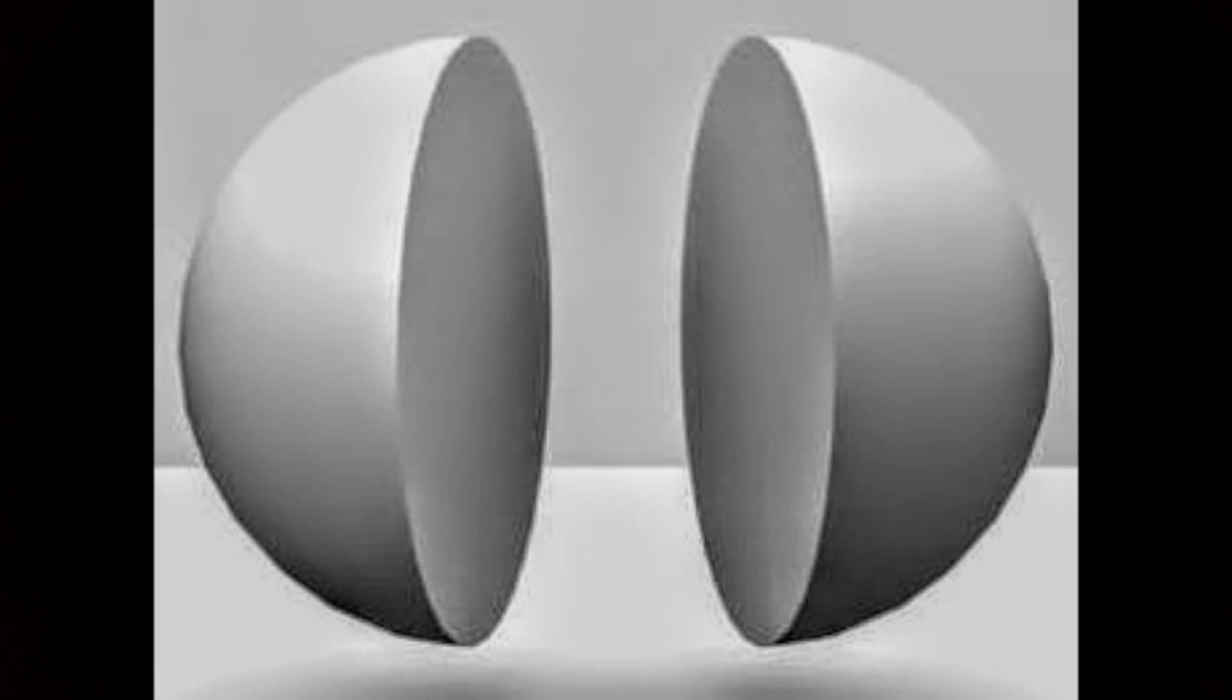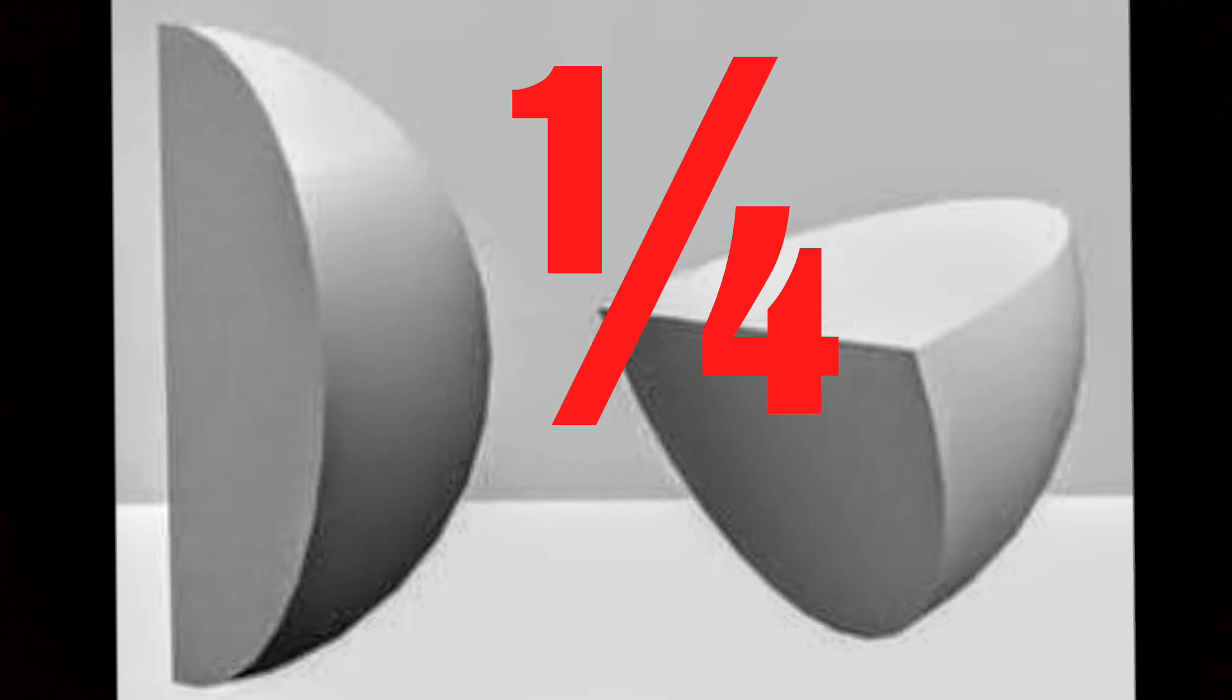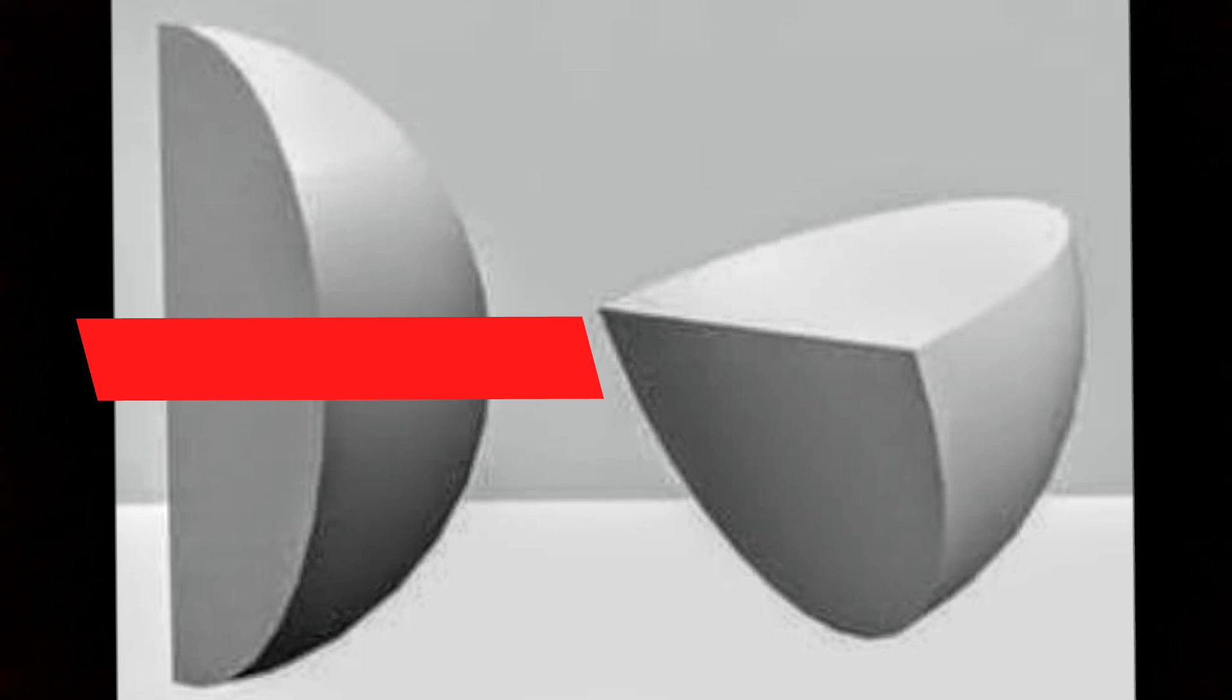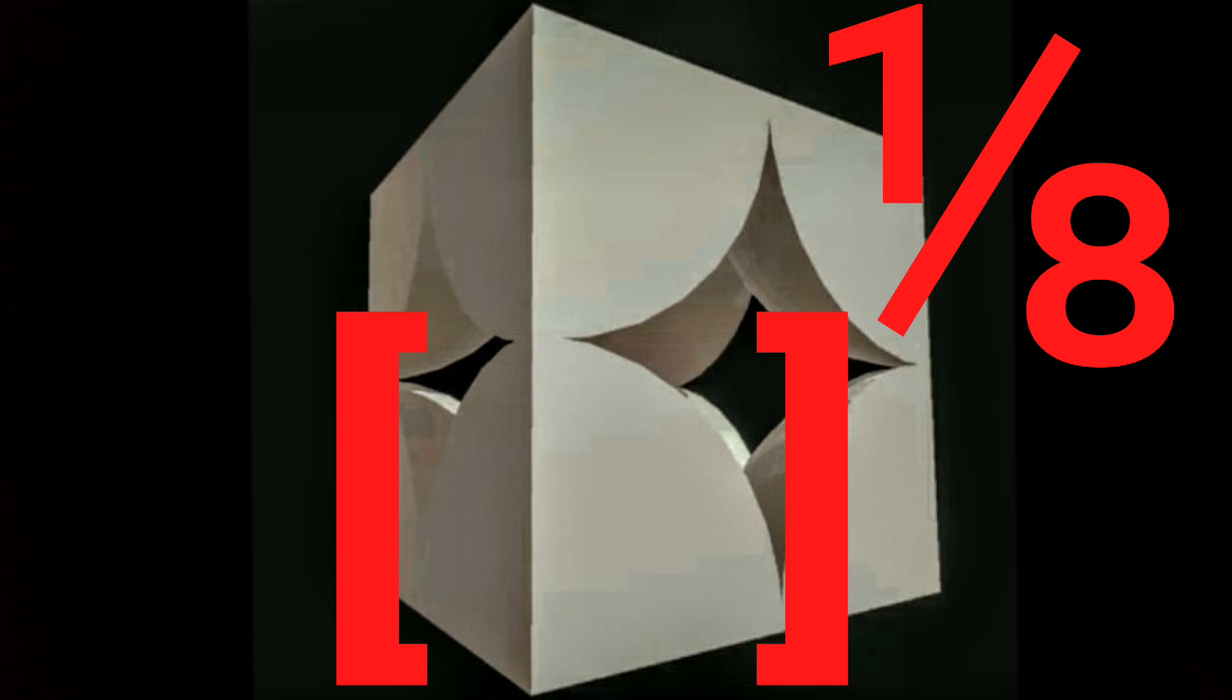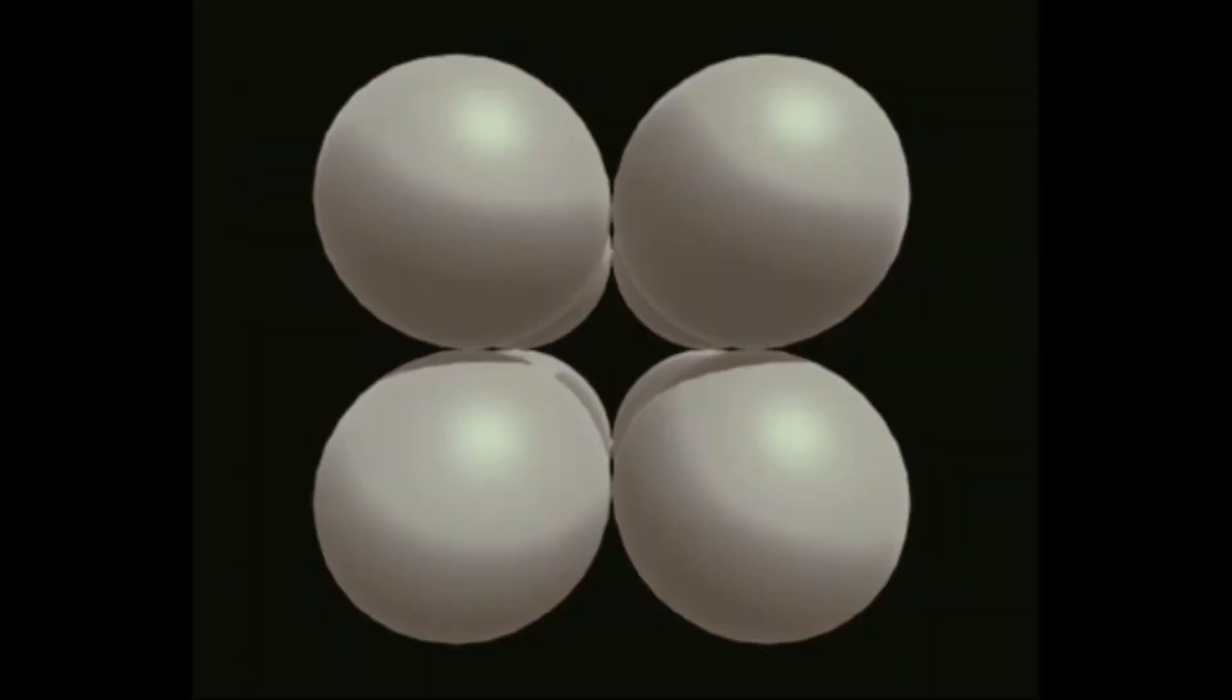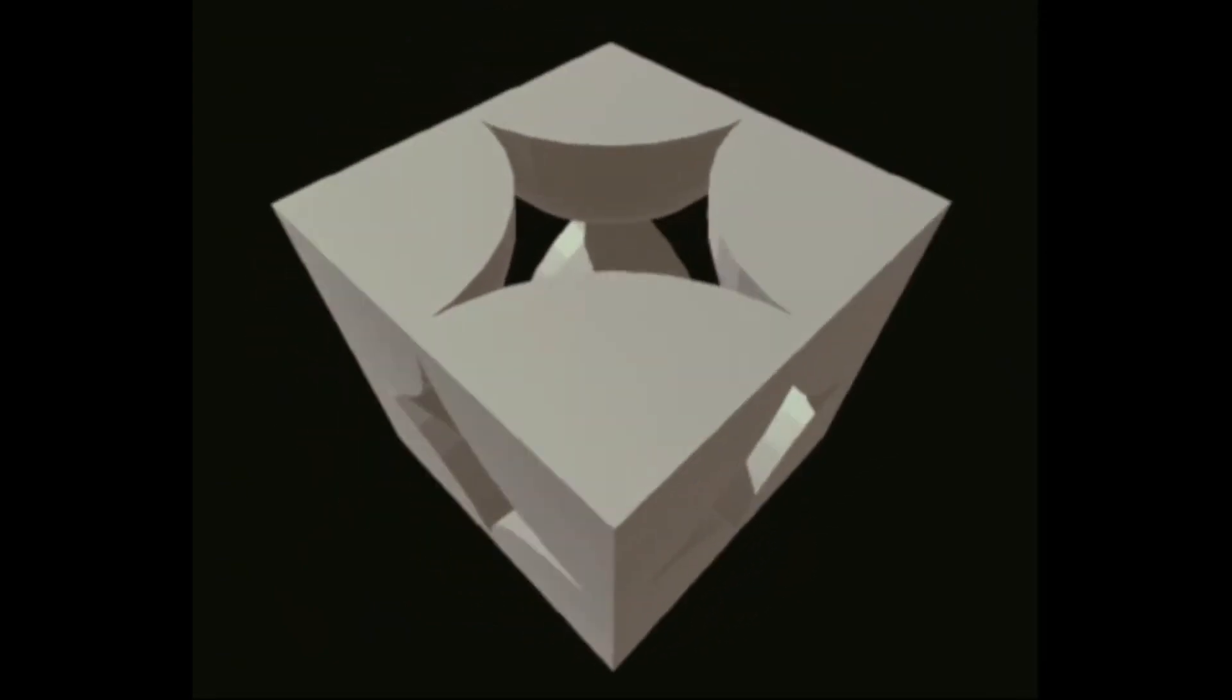When you cut a sphere into half, it looks like this, which is half of the sphere. When you further cut this part into two equal parts, it looks like this, which is one-fourth part of the sphere. When you further cut this part into two equal parts, it looks like this, which is one-eighth of the sphere. The eight atoms at the corner are cut into one-eighth part of the atom.